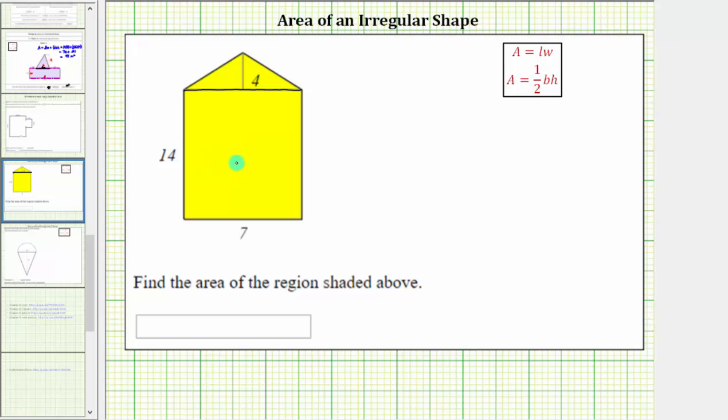Which means the total area is equal to the area of the rectangle plus the area of the triangle. And because the area of a rectangle is equal to length times width, and the area of a triangle is equal to one-half base times height,